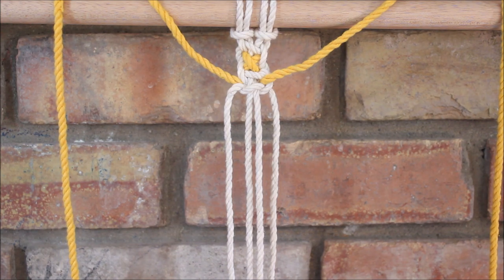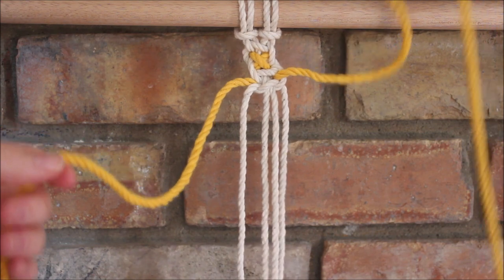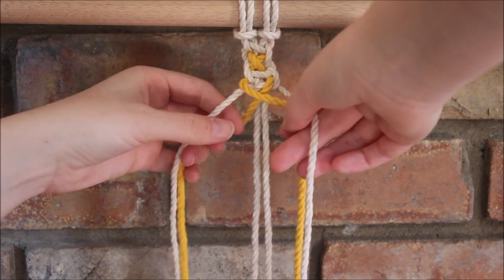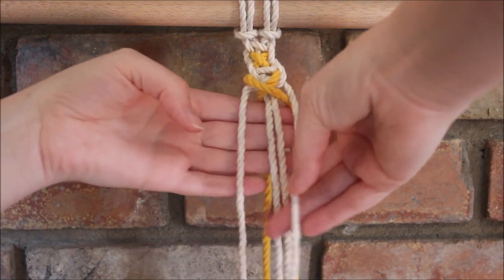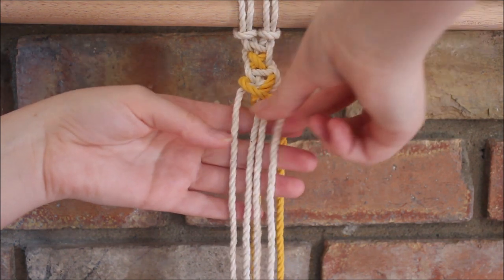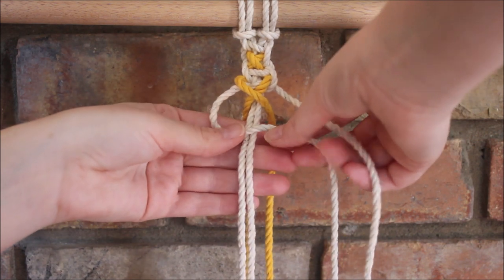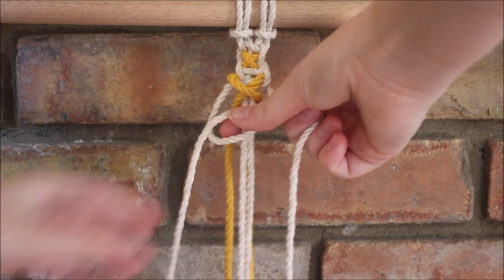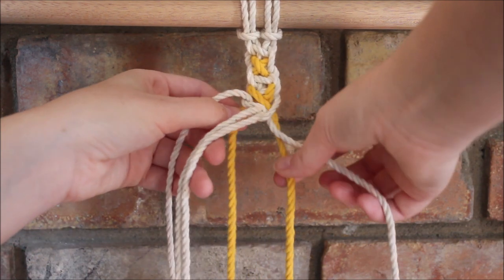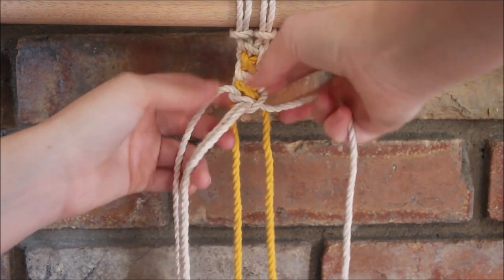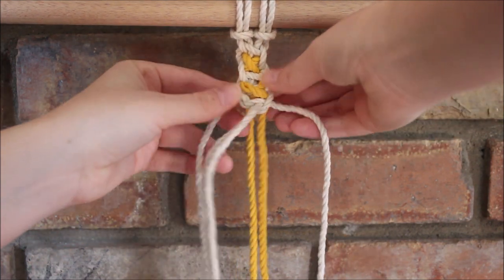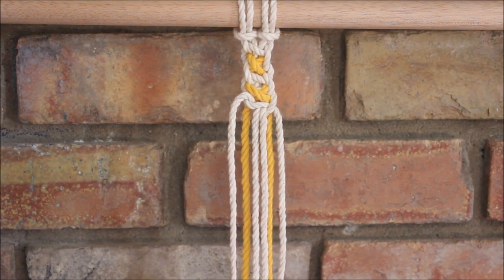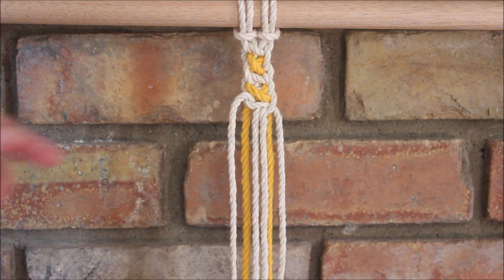And then I'm just repeating the same steps again. So I'm going to take my yellow cords, cross the left over the right to make an X shape. Take those neutral cords right out in front and tie the rest of my square knot around the two cords in the middle. Pull it tight and adjust those yellow cords to smooth out the X and tighten it up as well. Just like that. And we're just repeating these steps over and over again.